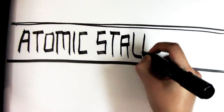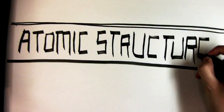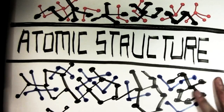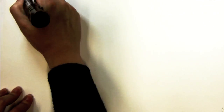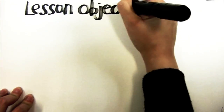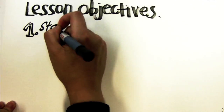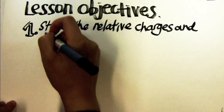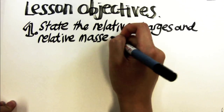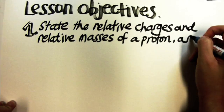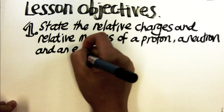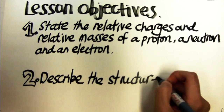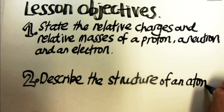Today we are going to be learning about the atomic structure. By the end of this video clip, you should be able to state the relative charges and relative masses of a proton, a neutron and an electron, and describe the structure of an atom.